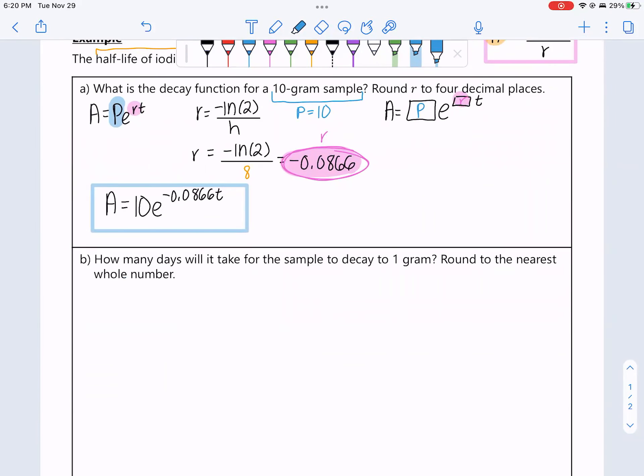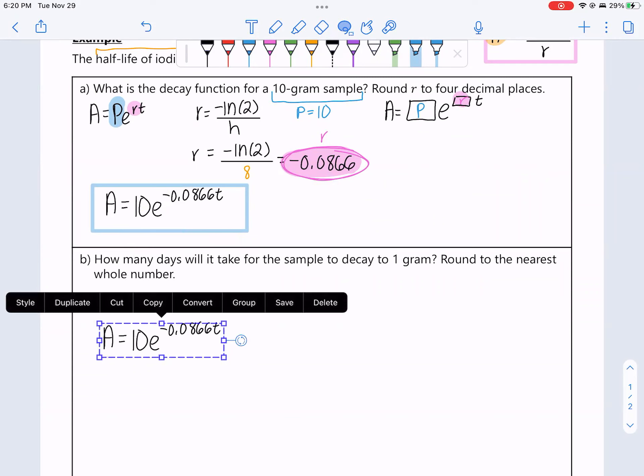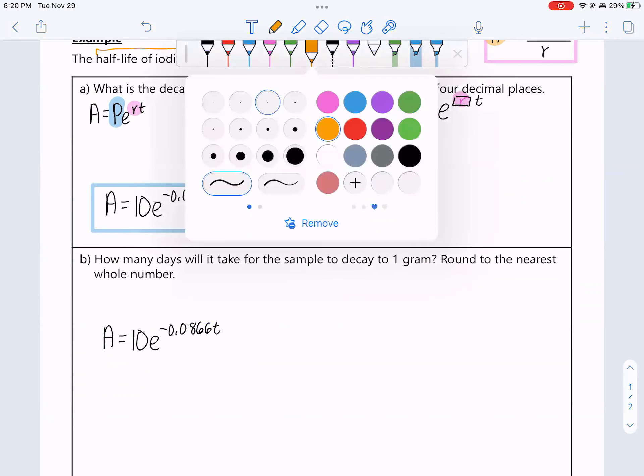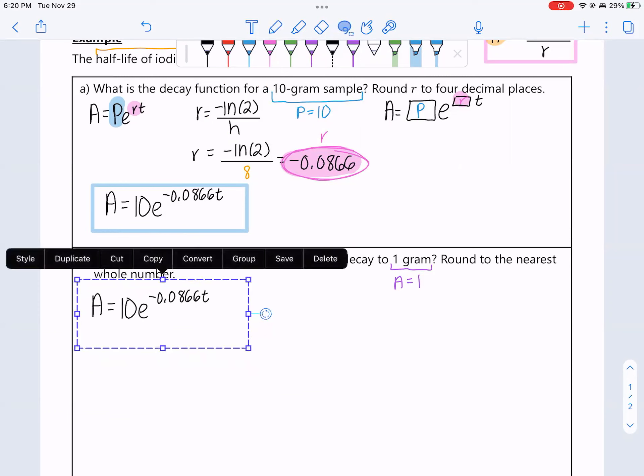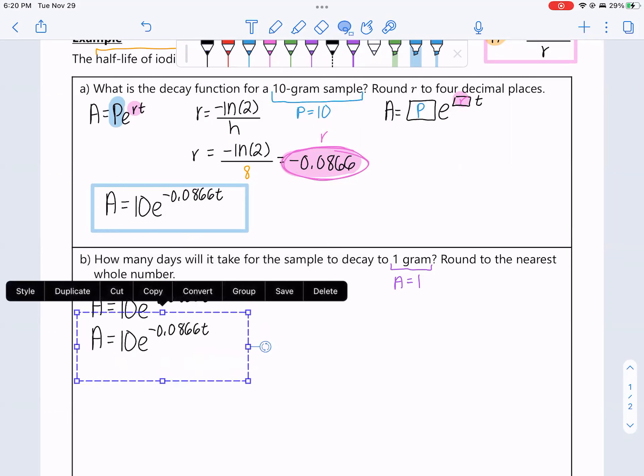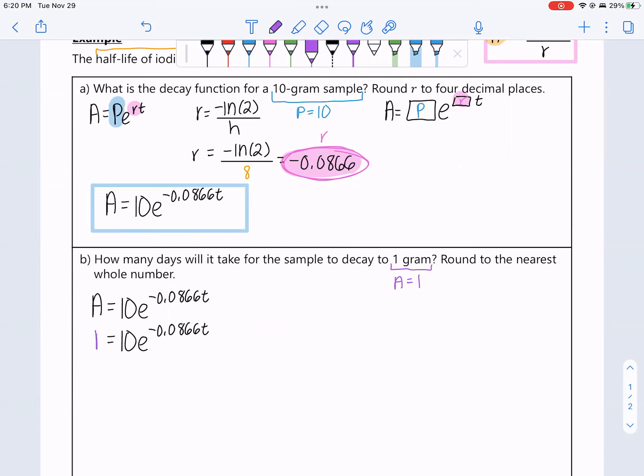How many days will it take for the sample to decay to one gram? Round to the nearest whole number. Alright. So we need this formula. And we're asked how long until it decays to one gram, so how much until there's one gram left. That means when is A equal to 1.